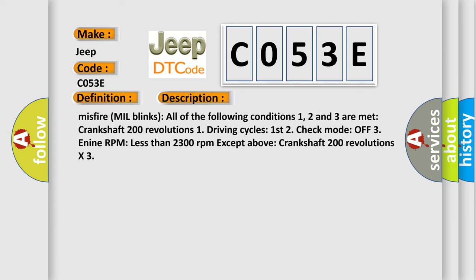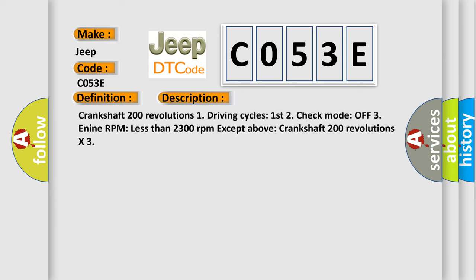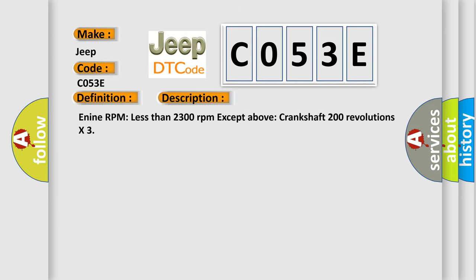Crankshaft 200 revolutions, 1 driving cycle, First 2 check mode off, 3 Engine RPM less than 2,300 revolutions per minute except above, Crankshaft 200 revolutions.